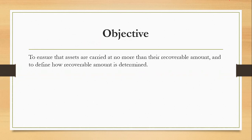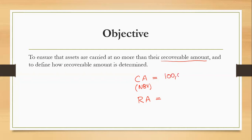First of all, what is the objective of this standard? The objective is to ensure that assets are carried at no more than their recoverable amount. Basically, there are two terminologies: one is the carrying amount, which is the balance sheet value or net book value, and the other is the recoverable amount, that is the benefit you can derive from that particular asset. For example, if carrying amount is $100,000 and recoverable amount is only $80,000, you cannot show the asset at more than its recoverable amount.